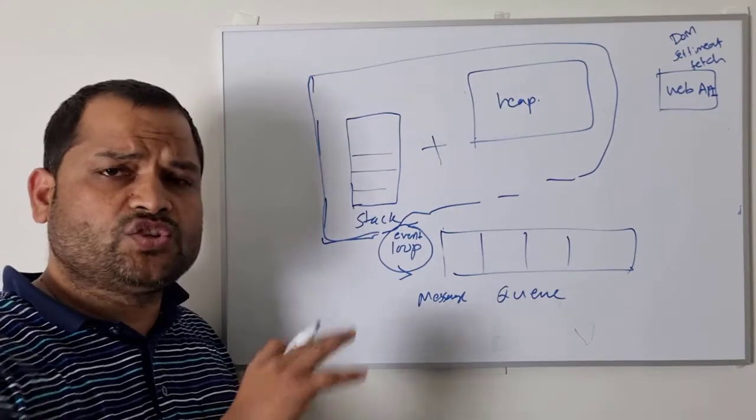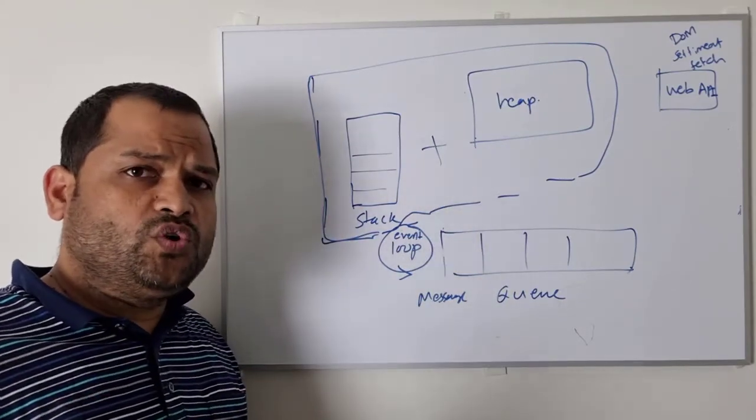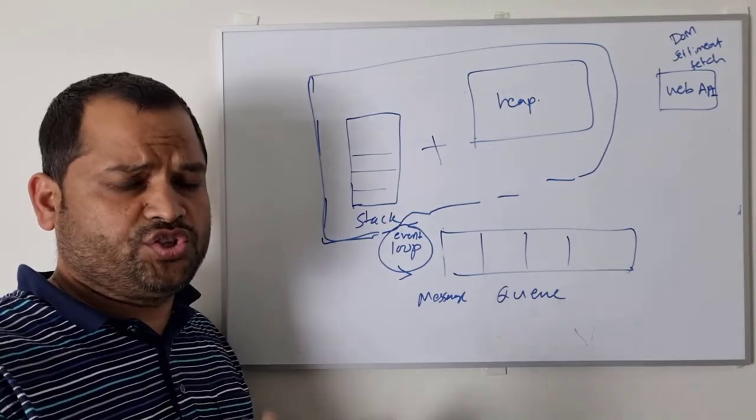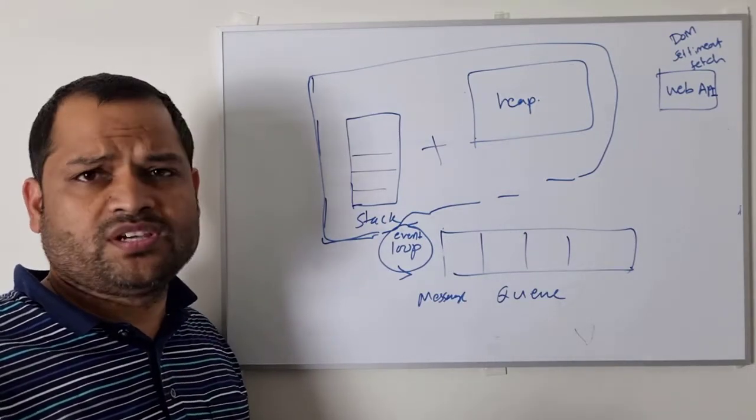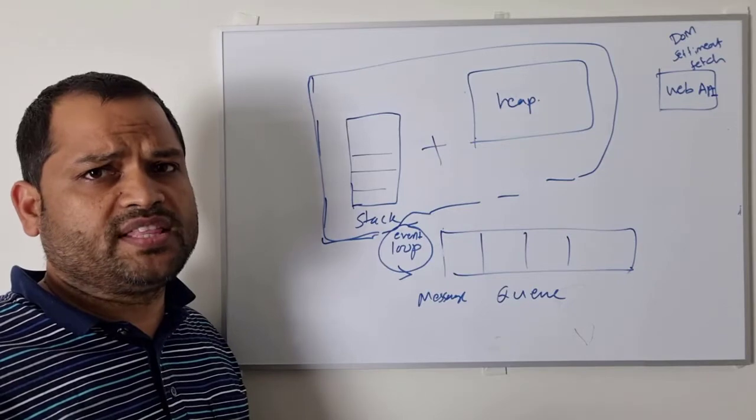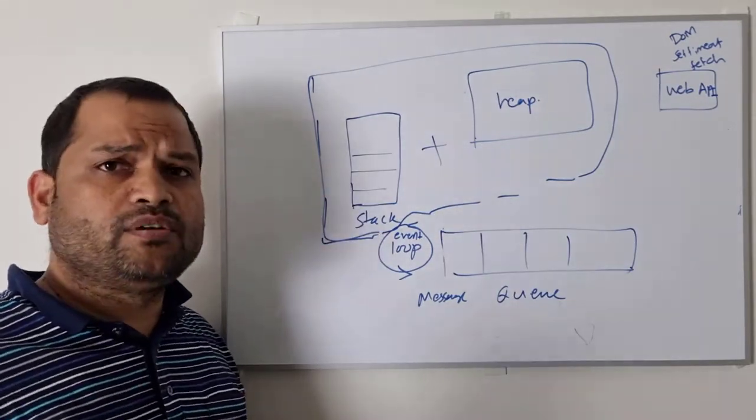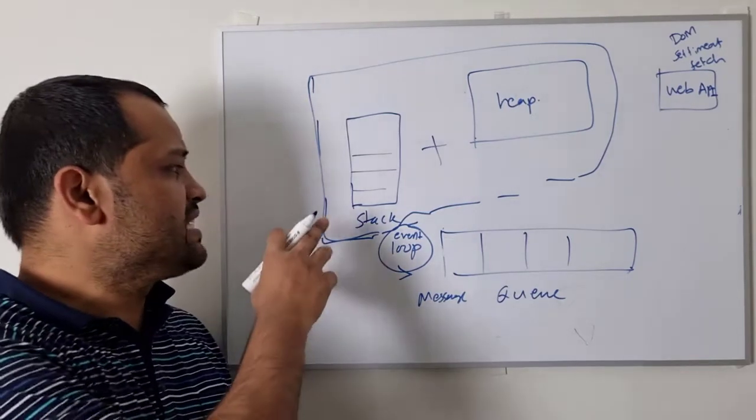The main reason why we store the objects on the heap is that we don't know beforehand how the object is going to behave. It can grow, it can shrink. So we don't know how much storage or memory space it is going to require. And that's the reason why we store the objects on the heap. And that is more efficient than storing it on the stack.